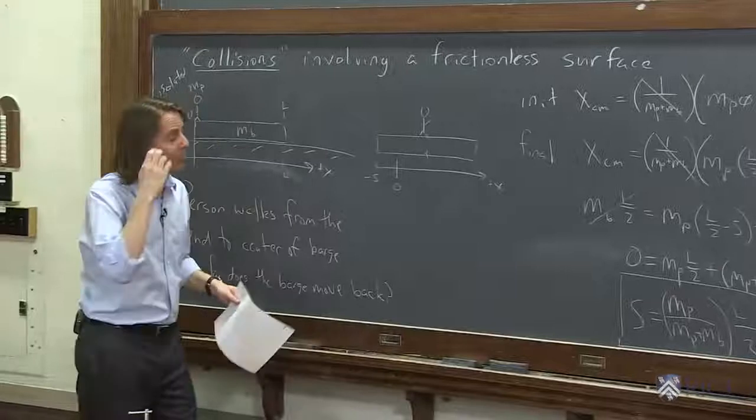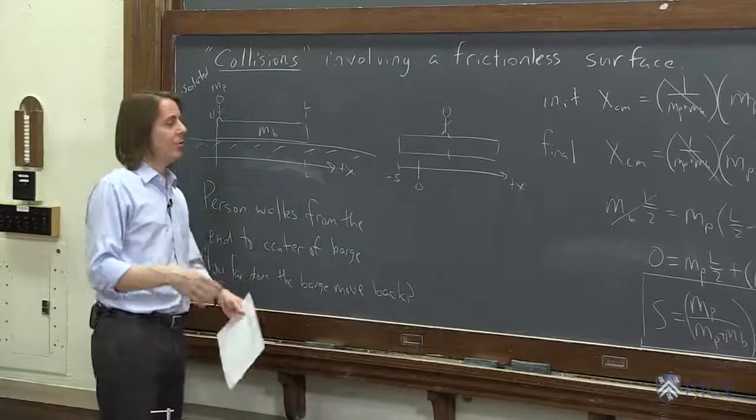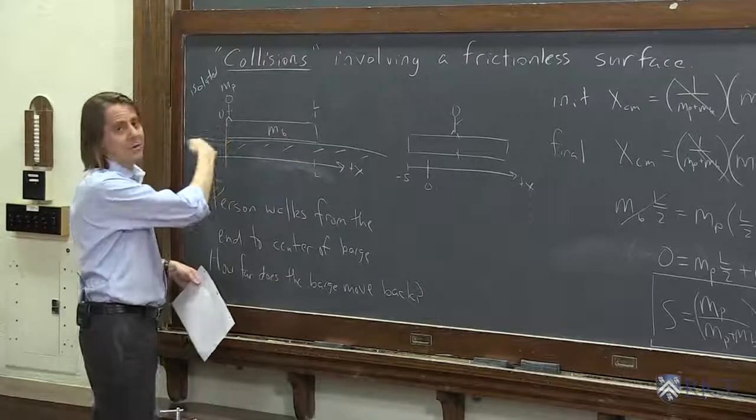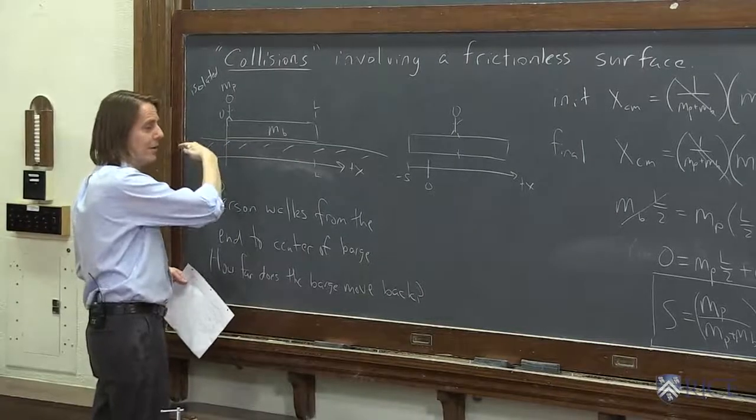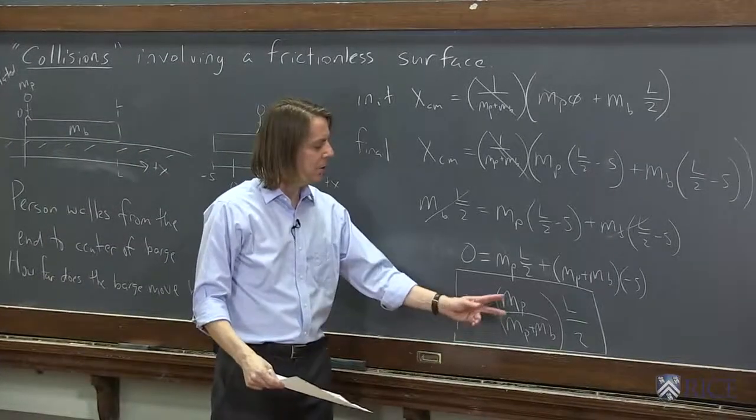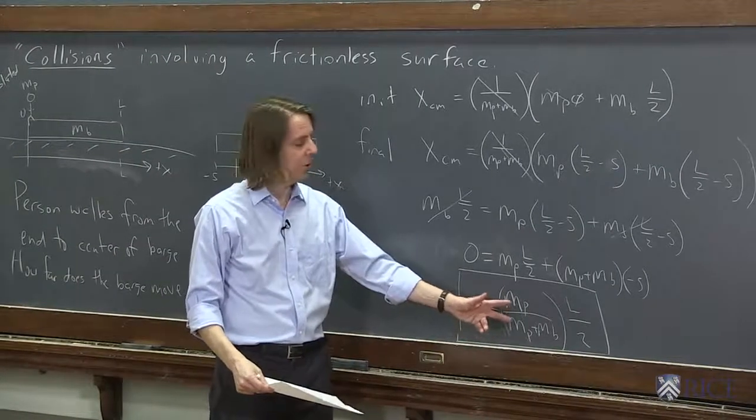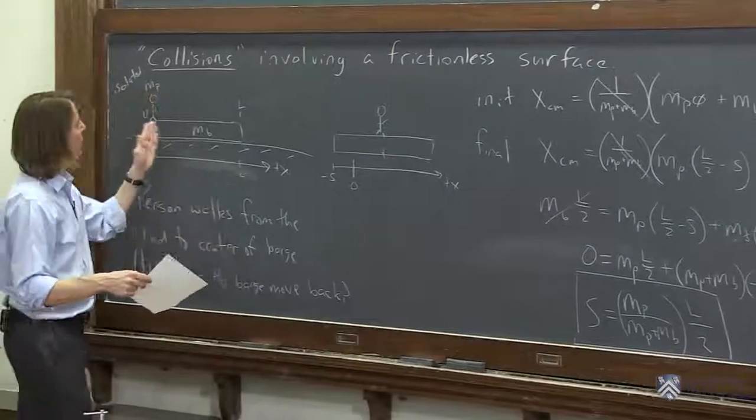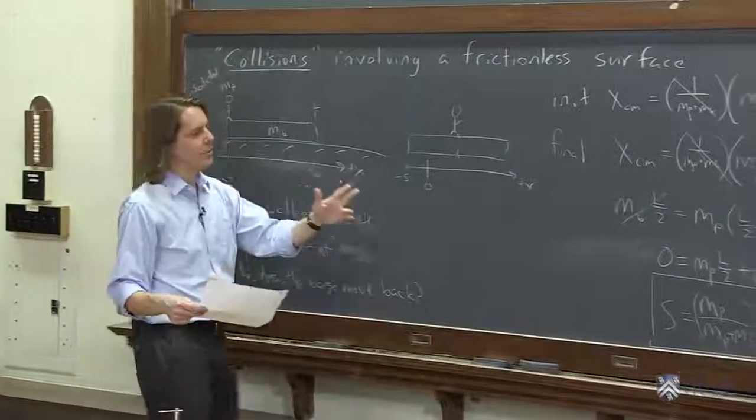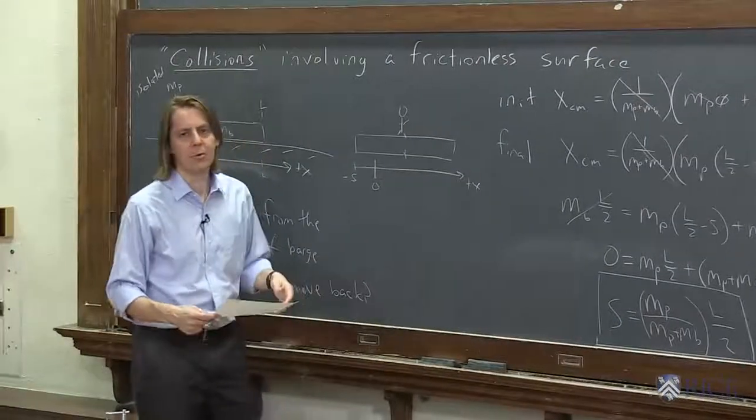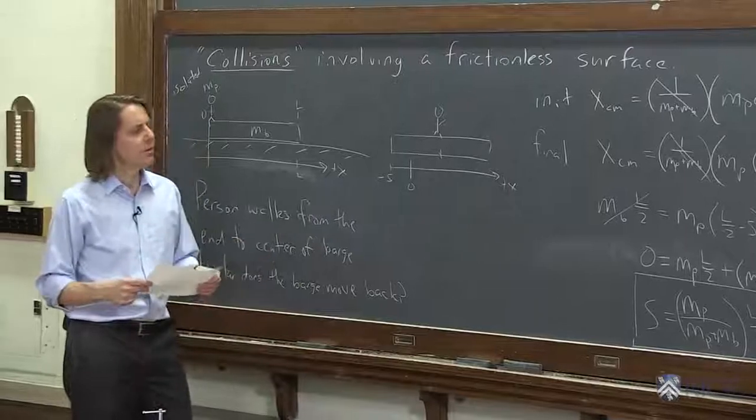What if I weigh a lot more than the barge? What if it's me and a kneeboard and I were to walk, the barge would respond a lot, right? The barge would really want to move back. And sure enough, if my mass is biggest, this is basically one, almost one. And in that case, the barge would move back to where I would pretty much stay in the same place. But the maximum you could ever get is L over two because I only walked to the point L over two. So the answer makes sense.